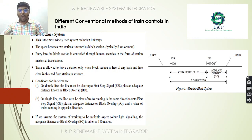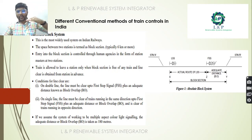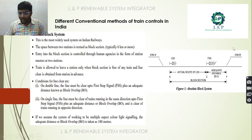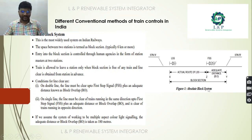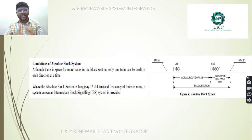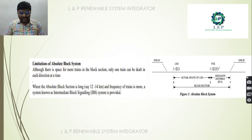On a single line, the line must be clear up to the FSS plus block overlap (BO) for trains running in the same direction, and also clear of trains running in the opposite direction. As shown in the block diagram, we have the First Stop Signal, the Last Stop Signal, and the block overlap — which is normally 180 meters. The main limitation of this method is that only one train can be dealt with at a time.